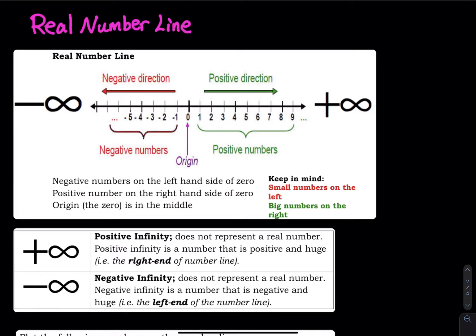So, the number line. We have a line, we have an origin — the origin is zero, right in the middle. We have negative numbers on the left and positive numbers on the right.